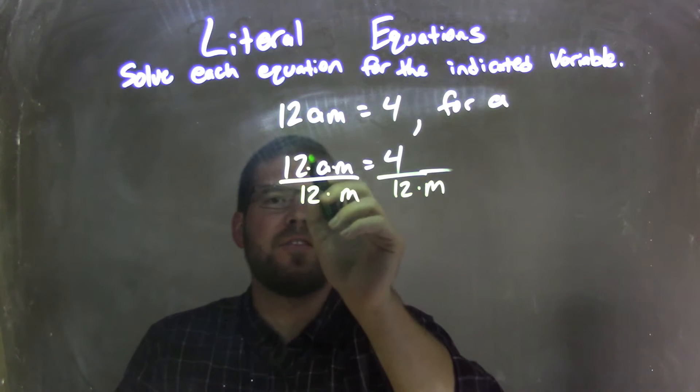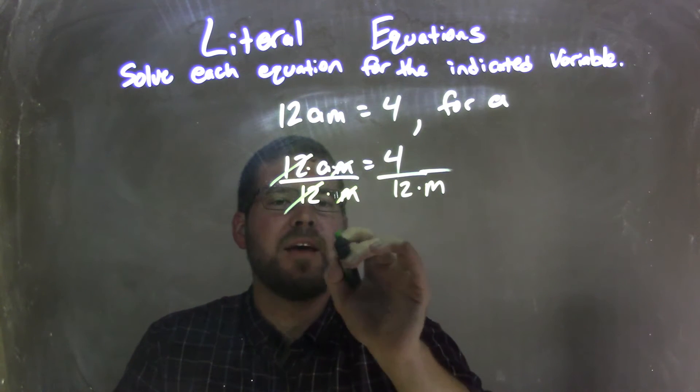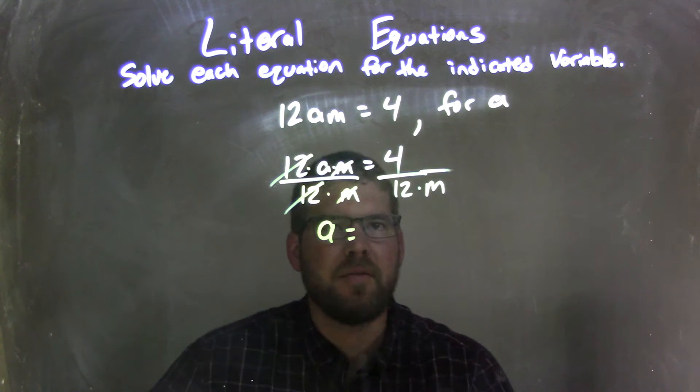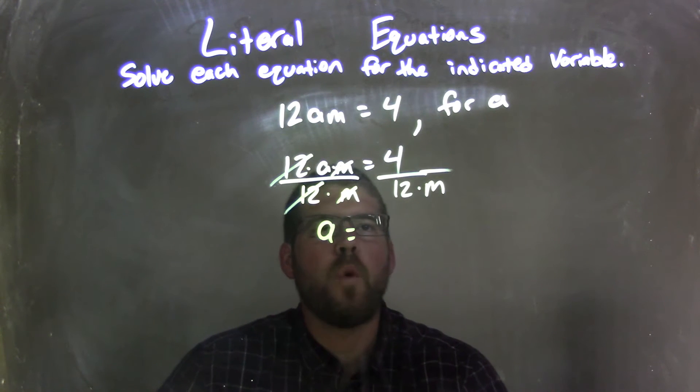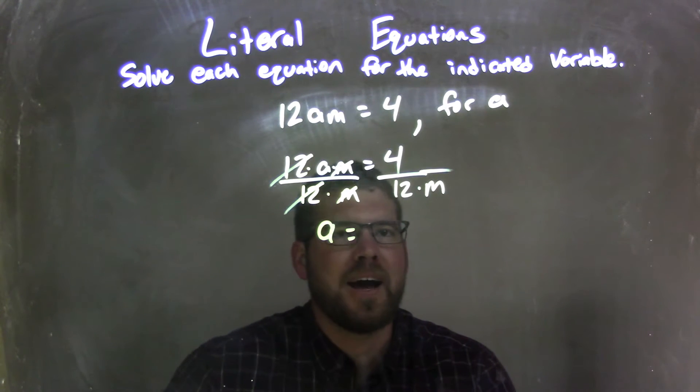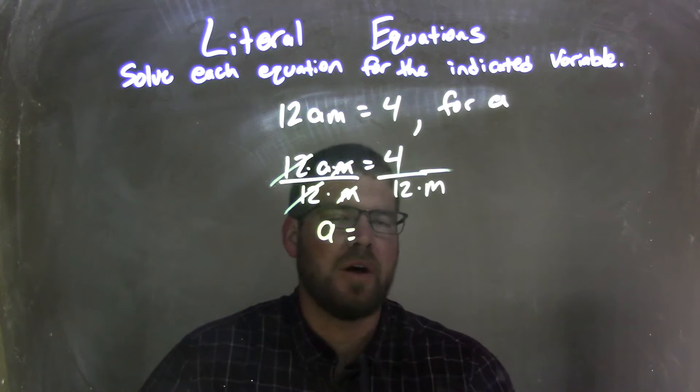What that does is eliminate the 12s, eliminates the M, leaving me with an A by itself on the left. And now I have 4 over 12 times M, right? Or 4 over 12M.